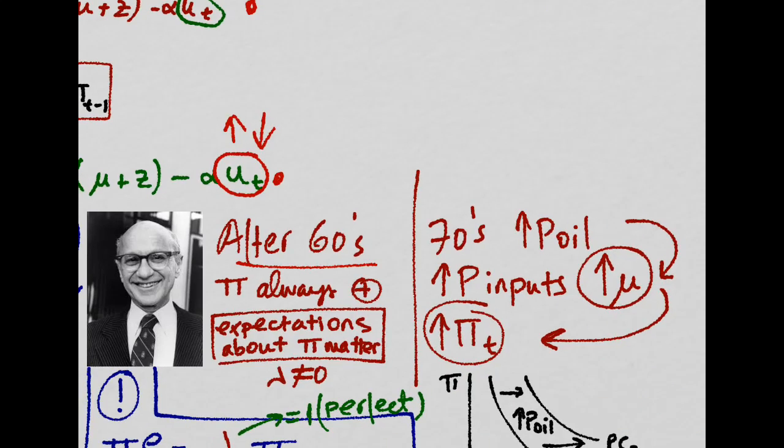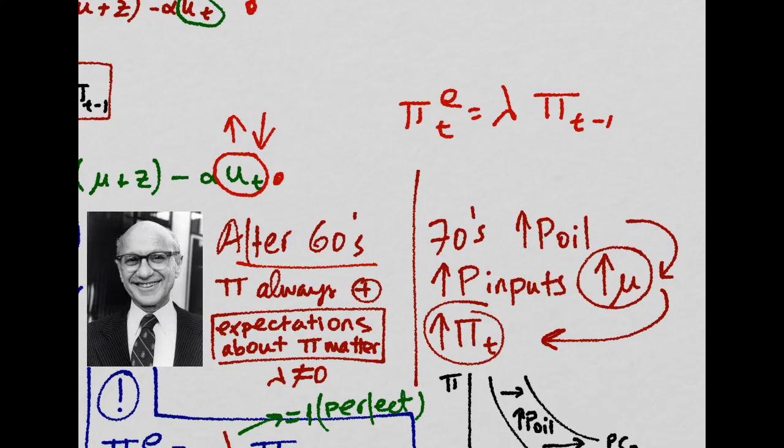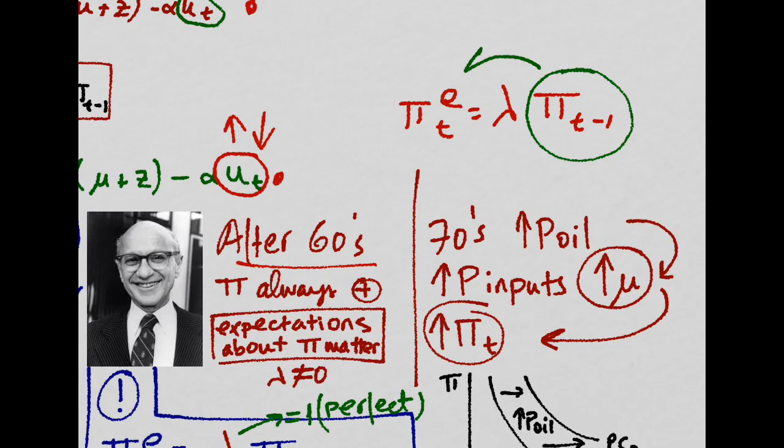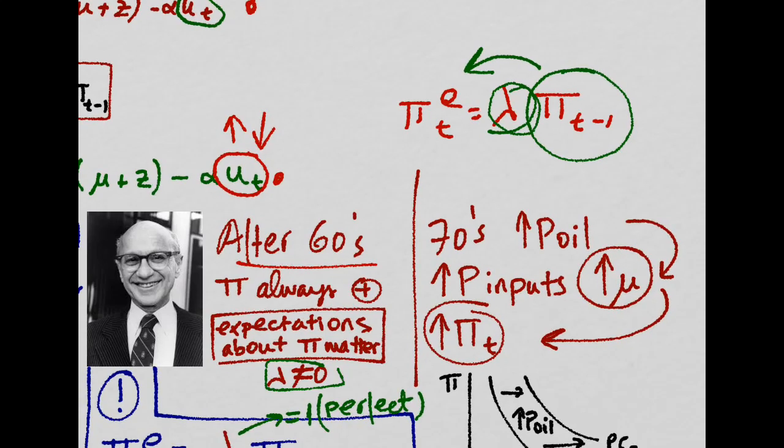After the 60s, inflation turned out to be always positive. Since it was always positive, you could look back at your previous experience to produce a forecast, an expectation about inflation, which mattered. Because in this case, your lambda is not equal to zero.